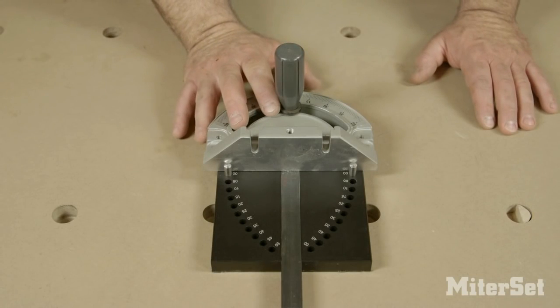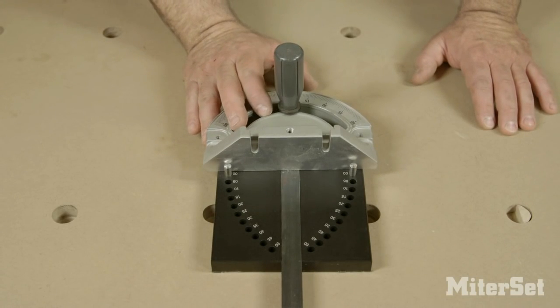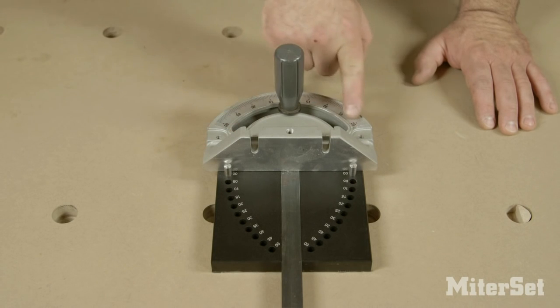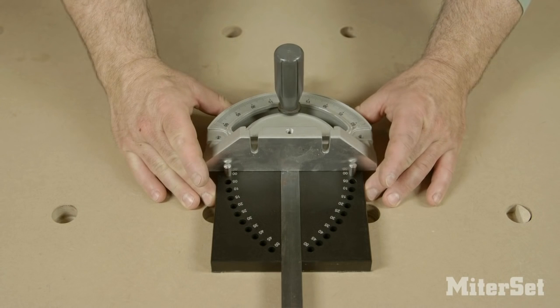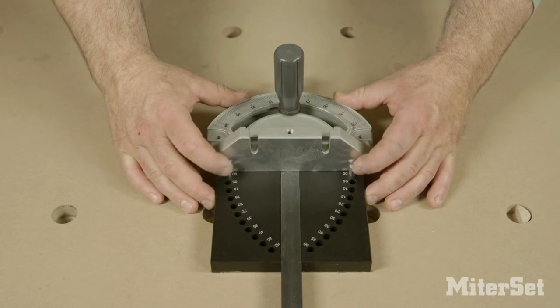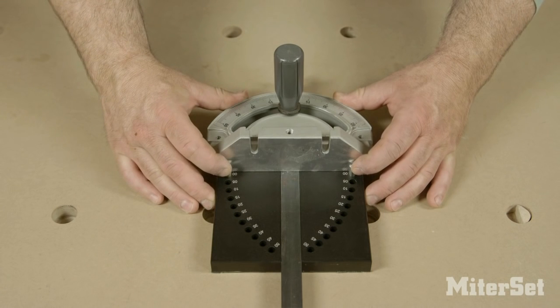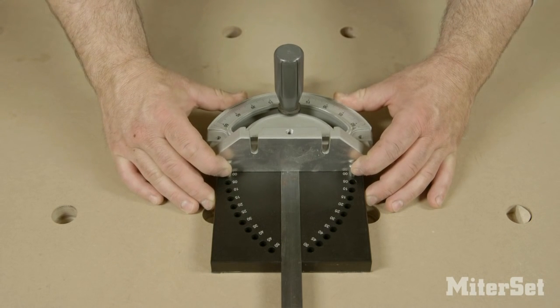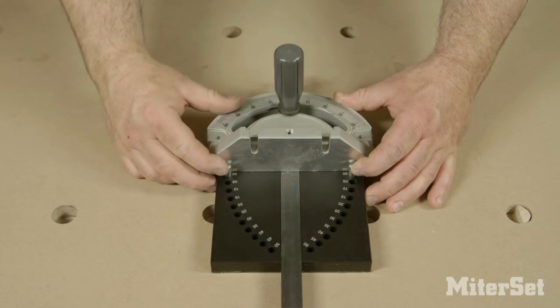I've got the miter gauge from my table saw and it really doesn't matter how accurate I have the protractor set because when I put my miter gauge into the miter slot and press the face of the gauge firmly against the two tapered pins, I have a perfect 90-degree angle.